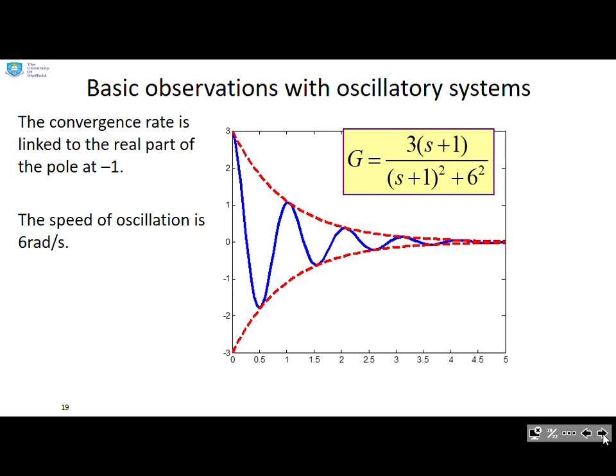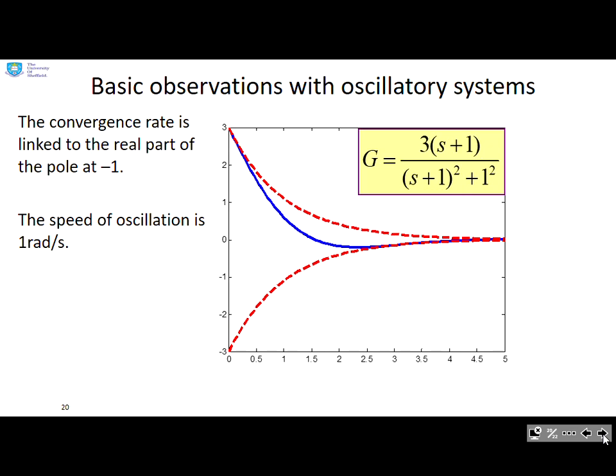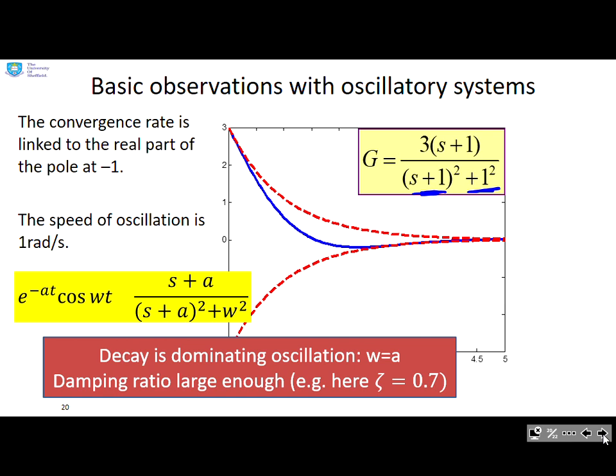What about oscillatory systems? For this oscillatory system, you can see the real part of the pole from this s plus 1 is at minus 1, and the imaginary part comes from this 6. You can see I've got a lot of oscillation compared to the decay. So in this case, the oscillation is dominating the decay because the omega is far bigger than the a. Or if you calculated the damping ratio, you'd find it's quite small and that would tend to be bad. What about this system here? Now here you can see the real part is minus 1 and the imaginary part of the pole is also 1. So in this case, we've got omega equals a and a damping ratio of about 0.7, and probably you would consider this is OK because it's converging fast enough so the oscillation doesn't give you a problem.